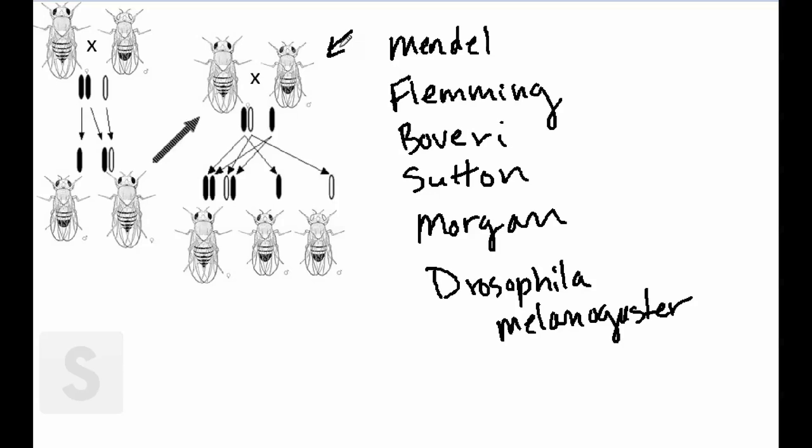They also discovered a mutation in fruit flies that causes white eyes. It was this mutation that would lead them to link chromosomes with heredity. Through thousands of breeding experiments, Morgan found that this mutation was recessive. He also found that it was on the sex chromosome, otherwise known as the X chromosome.